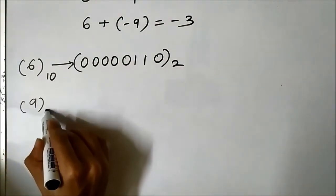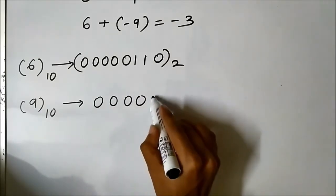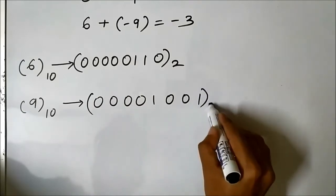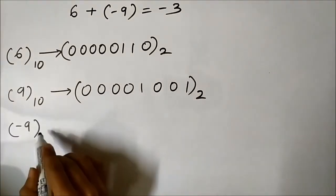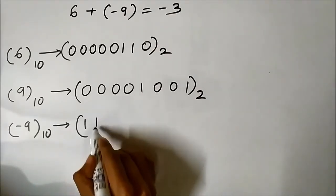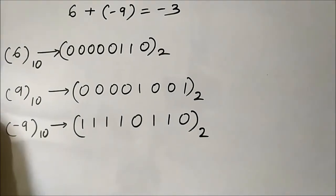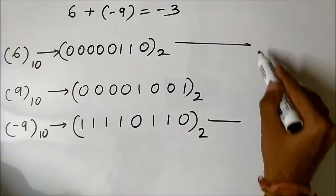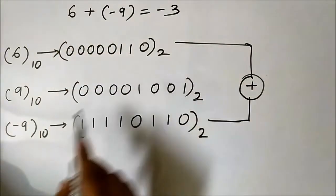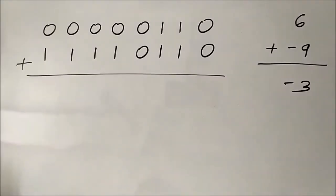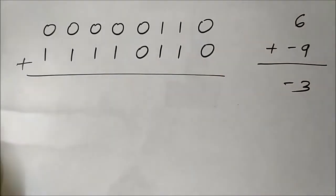First we write the binary form of plus 9 in 8-bit format: 0 0 0 0 1 0 0 1. Then minus 9 is simply the 1s complement of this, which is 1 1 1 1 0 1 1 0. Now we perform the addition of plus 6 and minus 9. Plus 6 in 8-bit format is 0 0 0 0 0 1 1 0. We have converted this binary subtraction into modified binary addition using the 1s complement concept.